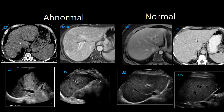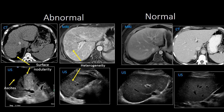Here are some examples of cirrhotic livers and normal livers on CT, MRI, and ultrasound. In the cirrhotic livers, we can see surface nodularity and a heterogeneous texture to the liver parenchyma. We can also detect ascites in a few of the cases. Compare those to the normals on the other side, where the liver parenchyma looks very smooth and there is no surface nodularity.